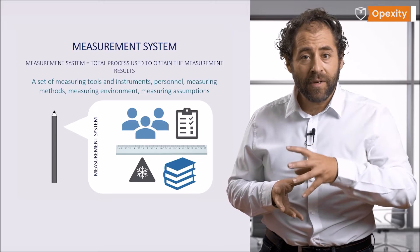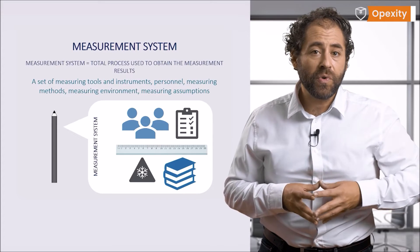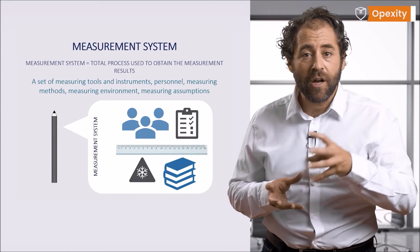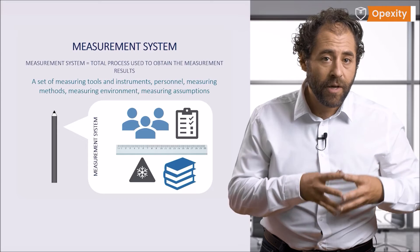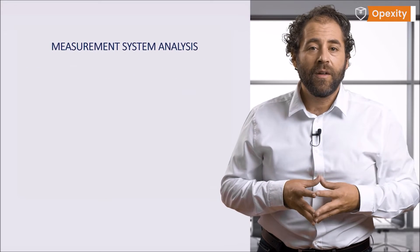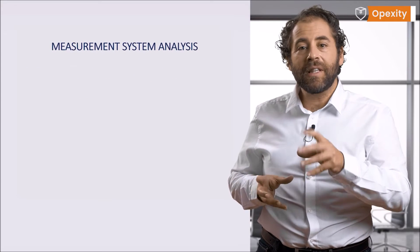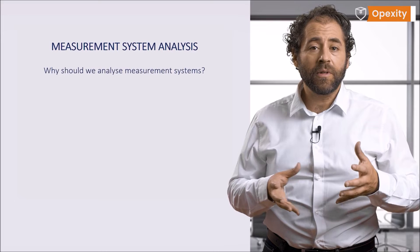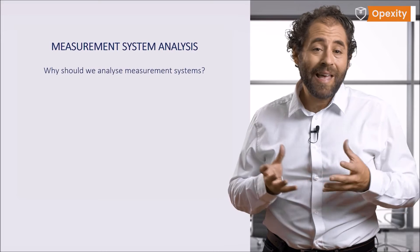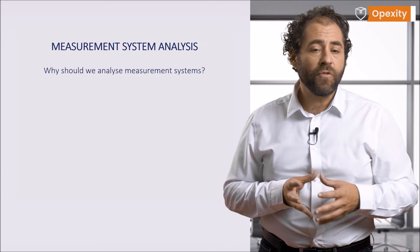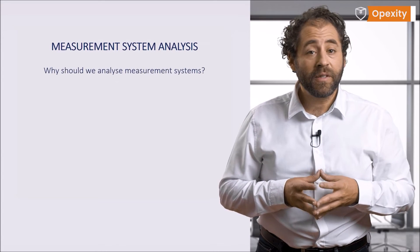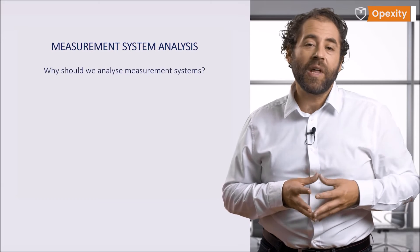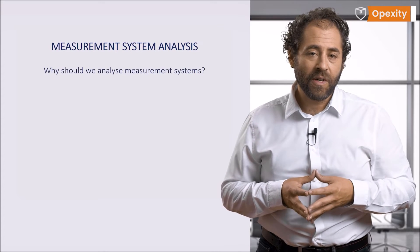— personnel, environment, and assumptions used to quantify a unit of measure to the feature characteristic being measured. If we can measure selected features, then why should the measurement systems be analyzed? First and foremost, because unfortunately we make a lot of mistakes while carrying out measurements.